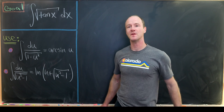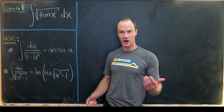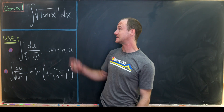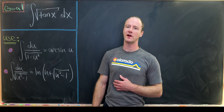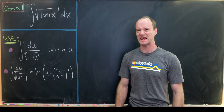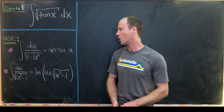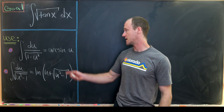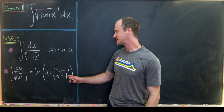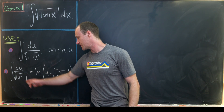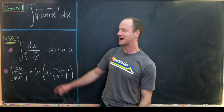Today we have a nice integral to evaluate: the integral of the square root of tangent of x. We're finding the antiderivative — this is not a definite integral. We'll use two main tools: the first is the well-known antiderivative of 1 over √(1 - u²), which is arc sine of u. The second relates the antiderivative of 1 over √(u² - 1) to a natural log expression.